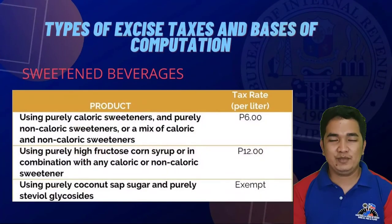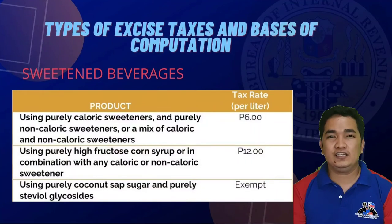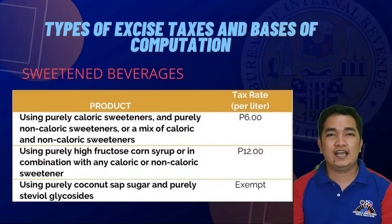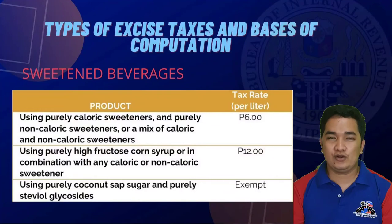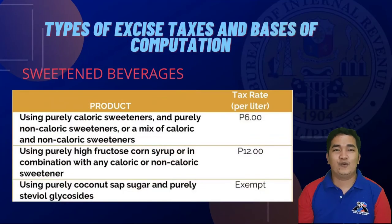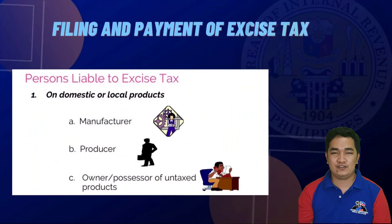For sweetened beverages, an excise tax of 6 pesos per liter applies when using purely caloric sweeteners, purely non-caloric sweeteners, or a combination of the two. A rate of 12 pesos per liter applies when using high fructose corn syrup or in combination with any caloric or non-caloric sweeteners. It is exempt when using purely coconut sap sugar and purely steviol glycosides.